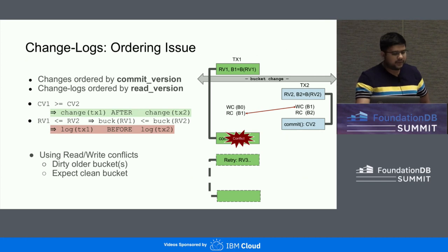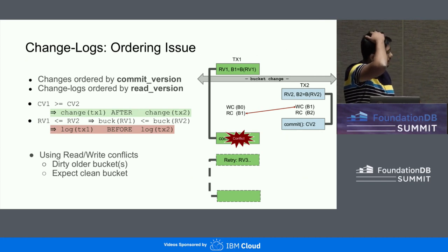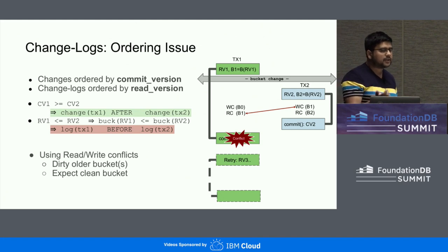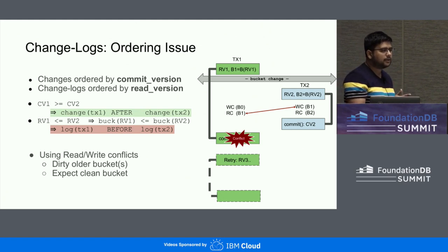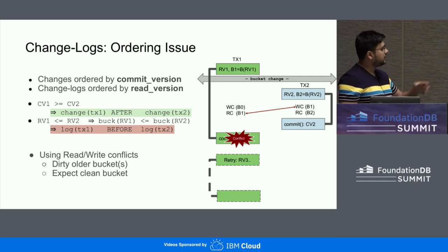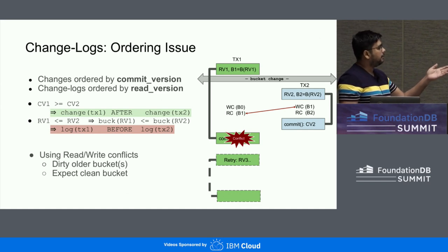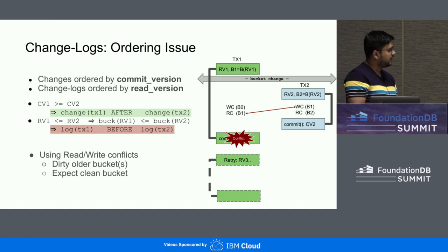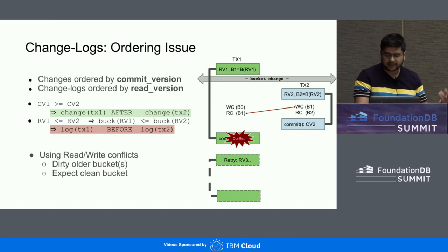If we had some way to apply user-defined functions on version stamps on the server side, we wouldn't need to do all of this. But unfortunately, FDB doesn't currently provide such functionality. In practice, we can expect to see some conflicts due to this, but on our workloads, it hardly matters — it's very, very few conflicts, almost negligible.